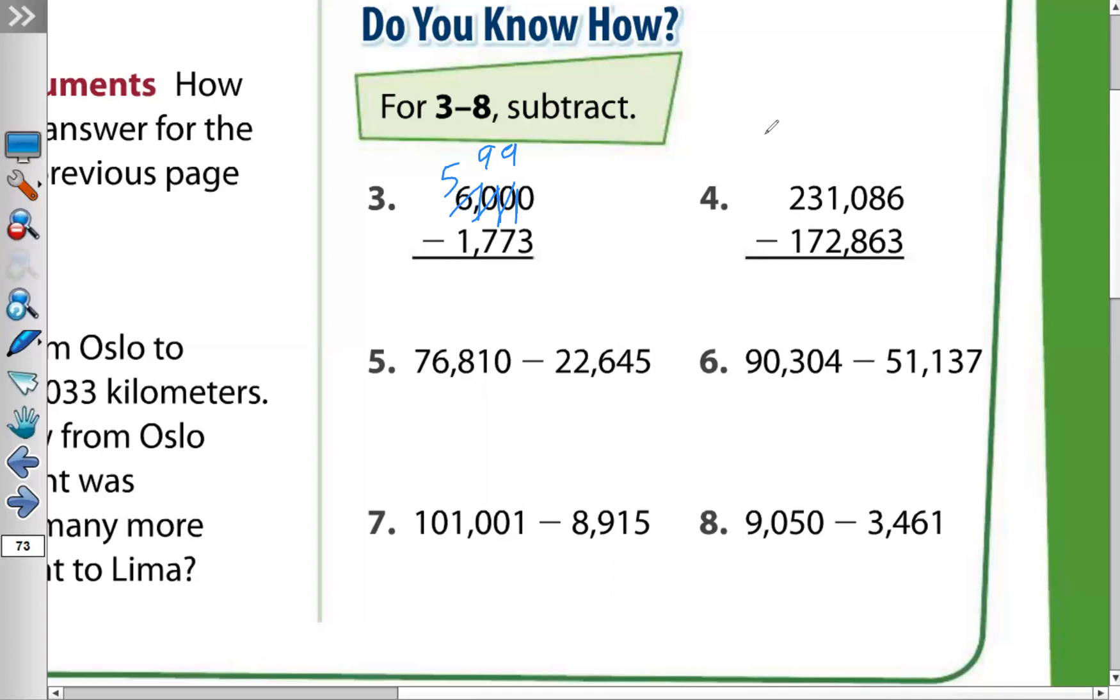10 minus 3 equals 7. Then 9 minus 7 equals 2. Again, 9 minus 7 also 2. Comma. 5 minus 1 equals 4. So the answer is 4,227.